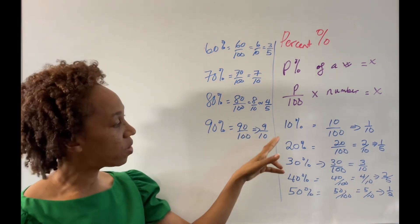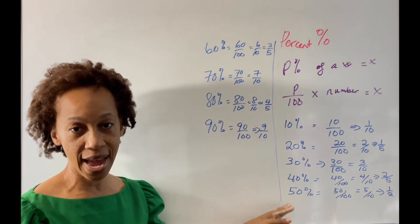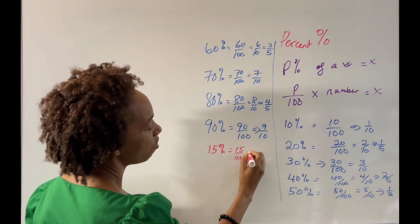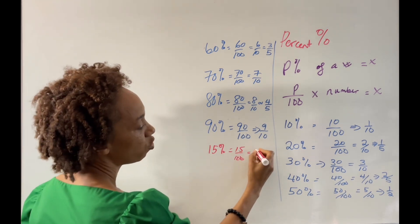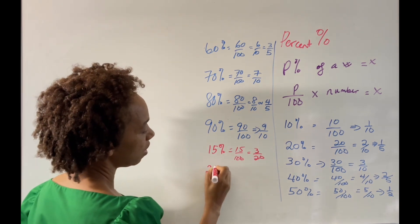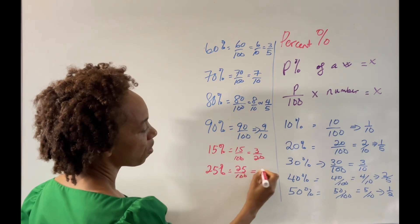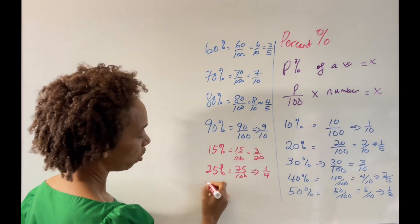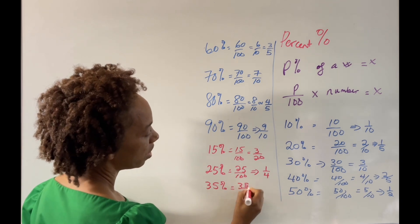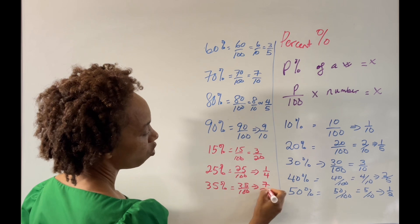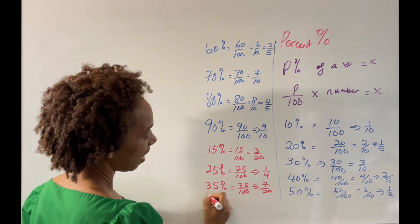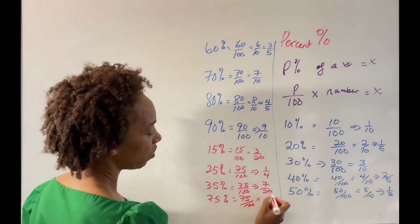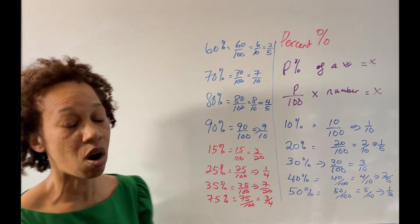You can also work with numbers that don't end in zero. 15% is 15 over 100, which reduces to 3 over 20. 25% is 25 over 100, which reduces to one quarter. 35% is 35 over 100, which reduces to 7 over 20. And 75% is 75 over 100, which reduces to 3 over 4, or 3 quarters.